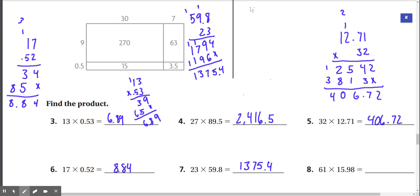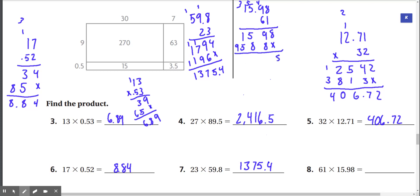Last one, number 8: 15.98 times 61. 1 times 8 is 8, 1 times 9 is 9, 1 times 5 is 5, 1 times 1 is 1. Then 6 times 8 is 48 — carry the 4 — 6 times 9 is 54 plus 4 is 58 — carry the 5 — 6 times 5 is 30 plus 5 is 35 — carry the 3 — 6 times 1 is 6 plus 3 is 9. Adding: 8, 9 plus 8 is 17, 6 plus 8 is 14, 5 plus 1 is 6, 6 plus 8 is 14, 5 plus 1 plus 1 is 7, and 9. Decimal place — our answer is 974.78.